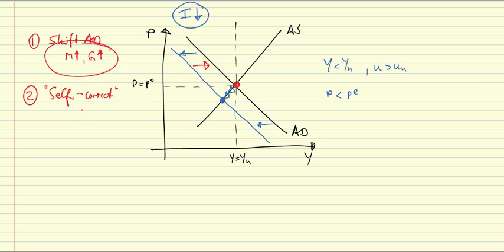Based on what we've learned, in such an equilibrium where P is below PE, price expectations will be adjusted downward. So AS will shift downward until we get a new equilibrium back at the natural level and back at a medium-run equilibrium for prices with a lower price level.